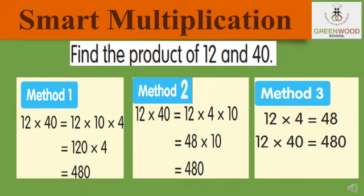Method 2: 12 into 40 — split 40 into 4 into 10, but first 12 into 4 gets multiplied. 12 into 4 is 48, and 48 into 10 is equal to 480. Method 3: 12 into 4 is equal to 48. We know that 40 has 1 zero, so simply after 48 we put 1 zero. Directly we get our answer 480.